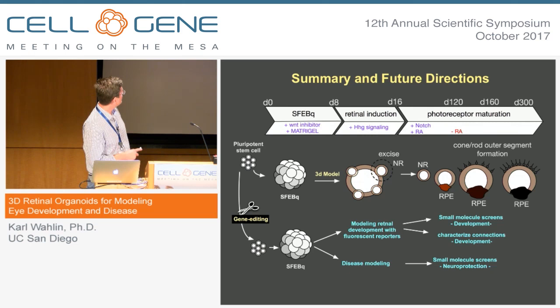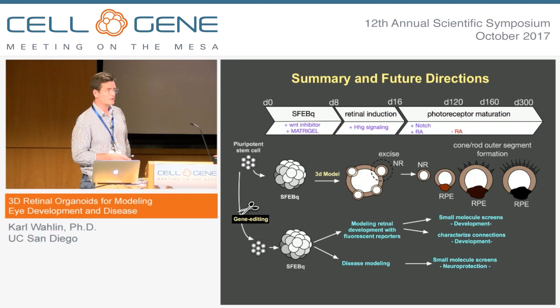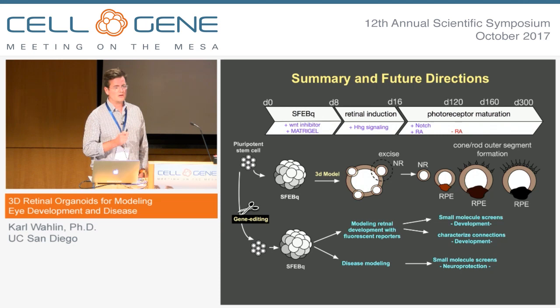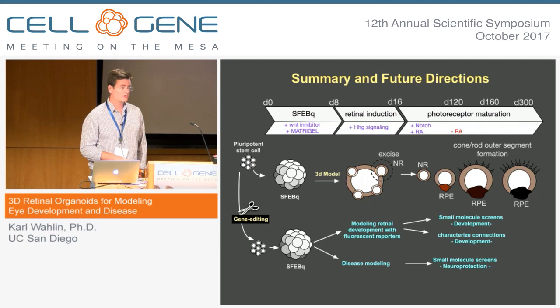In summary, we have a system where we can take pluripotent stem cells and grow them into 3D retinas. These retinas grow outer segments — a notable feature since many retinal degenerations start with disruption and degeneration of the outer segment, so having these in culture helps with disease modeling. We're using gene editing to develop different reporters to track and monitor cells in culture, enabling disease modeling with purified batches of confirmed retinal cells. The disease modeling with reporters will allow us to do small molecule drug screens to identify new protective pathways.